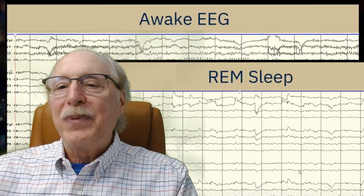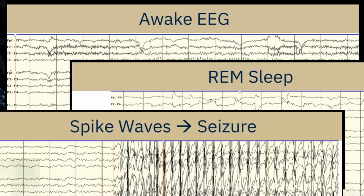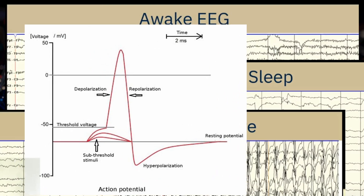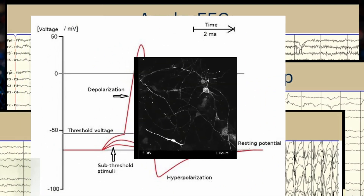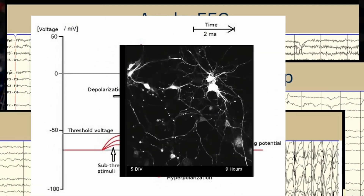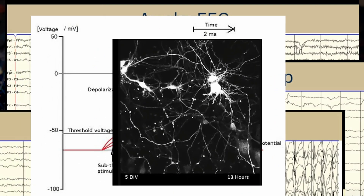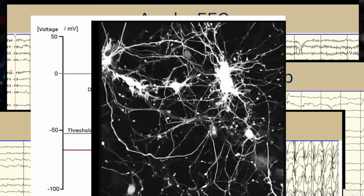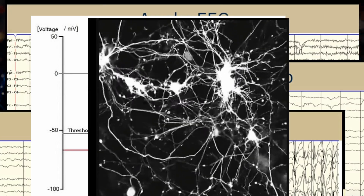I'm Charles Simon, long-time AI researcher, software developer, and manager. In addition to AI work, I've developed software for several neurological test instruments and neural simulators. Along the way, I learned a lot about the capabilities and limitations of biological neurons and how your brain must work to do the things it does.